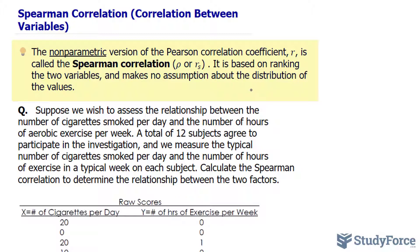Unlike the Pearson Correlation, however, it is based on ranking the two variables and making no assumption about the distribution of the values. So when the data isn't normally distributed, we tend to use this coefficient.